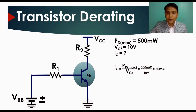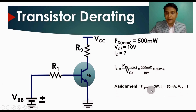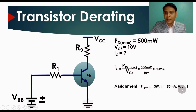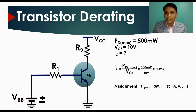Here is an assignment for you: given power dissipation equals 3 watts and IC equals 50 milliamperes, find the collector-to-emitter voltage VCE. Please solve this and write your answer in the comment section. Thanks for watching — if you have any questions, feel free to ask in the comments.